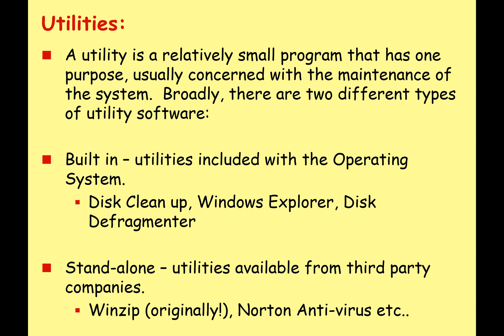So, utilities. A utility is a relatively small program that has one purpose, usually concerned with the maintenance of the system. There are broadly two different types: built-in utilities that come with your operating system — for example, if you're using Windows, it comes with Disk Cleanup, Windows Explorer, Disk Defragmenter, etc.